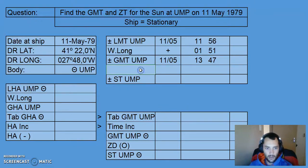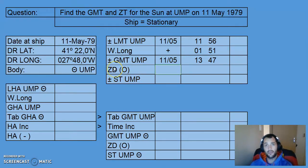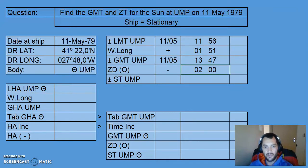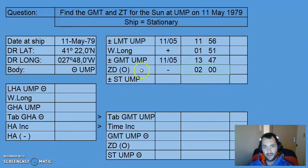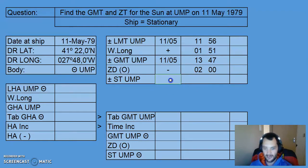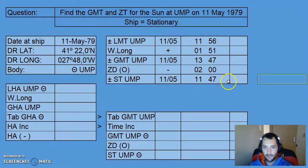We also need to find the ship's time. The ship is in zone Oscar, in the western hemisphere as seen from the longitude. The time difference to go from west to Greenwich is 2 hours, but since we're going from Greenwich back to the ship in the westerly direction, we subtract 2 hours. That keeps us on the same date at a time of 11:47.